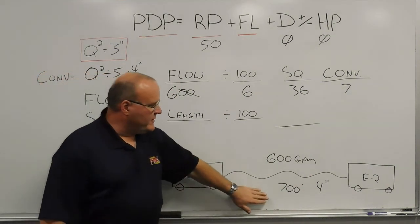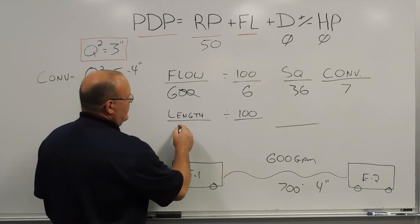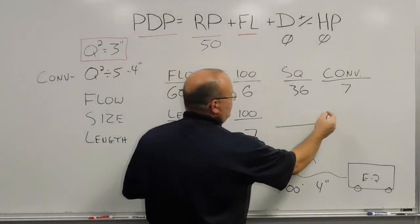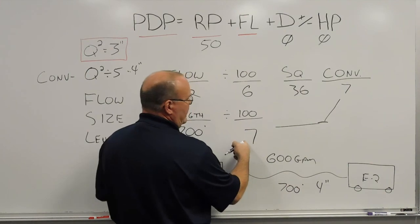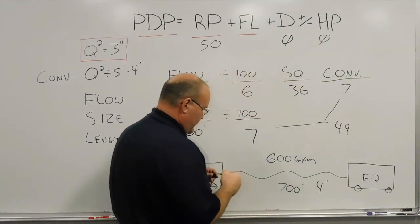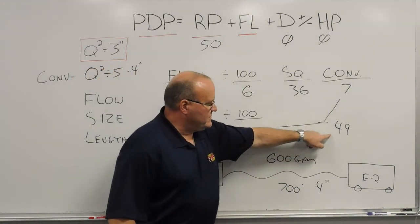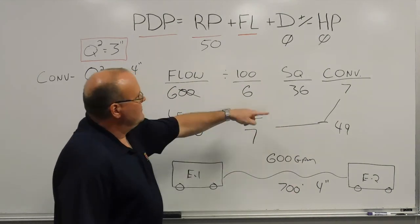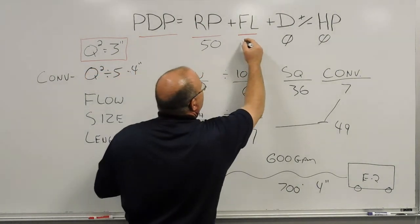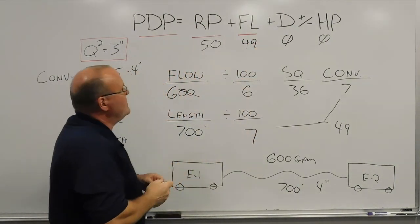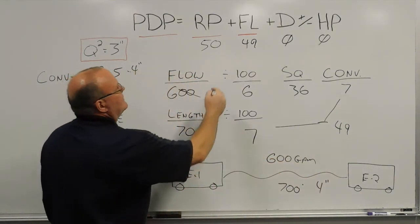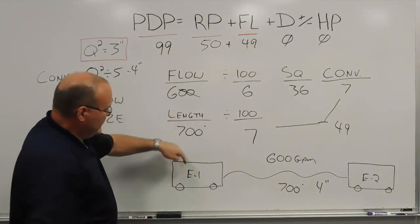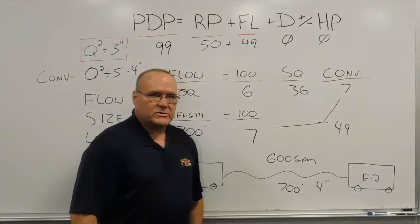For the length, we have 700 feet. We take the 700, divide by 100 to get 7. Then we multiply the friction loss per 100 feet times the length — 7 times 7 — and we end up with 49 pounds of friction loss from engine 1 to engine 2, flowing 600 gallons a minute through 700 feet of 4-inch hose. The friction loss of 49 plus the residual pressure of 50 pounds at engine 2's pump panel gives us 99 pounds discharge pressure on engine 1's pump. No devices, no head pressure — just for simplicity.